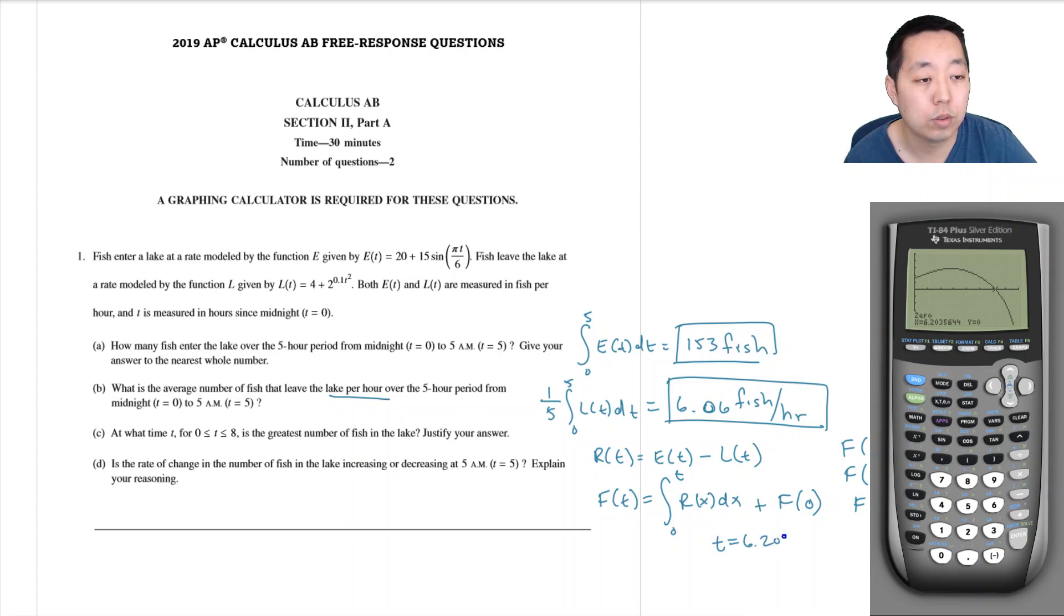And that's when r(t) is equal to zero. So I can calculate that zero here. I can do second, calculate, the zero there, right bound, oh let me make it eight, and then guess, there, whatever. Just make it take longer. And so my other critical value is t is equal to 6.204.